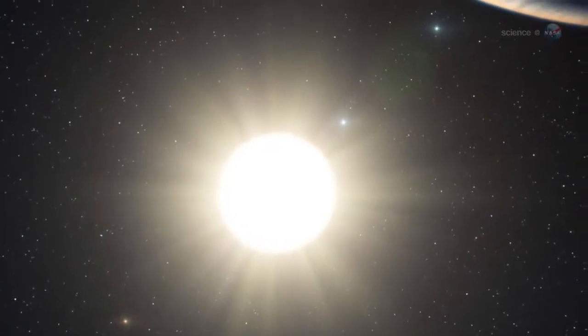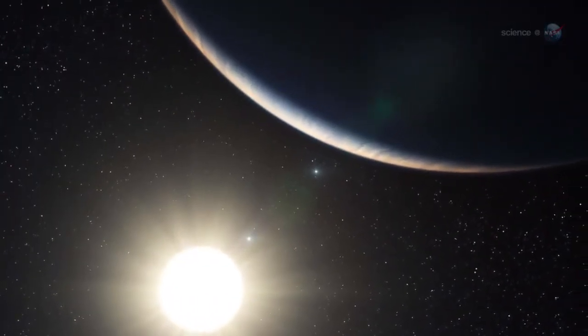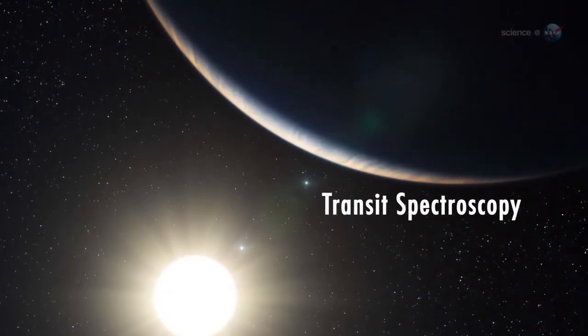The reflected light of an exoplanet tells its story, explains Kepler program scientist Doug Hudgins, also at NASA Headquarters. To get at that story and learn about the planet's atmosphere and composition, we can use a technique called transit spectroscopy. The basic idea is simple.